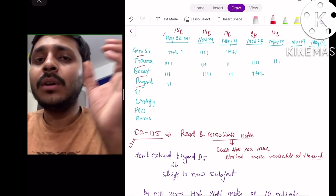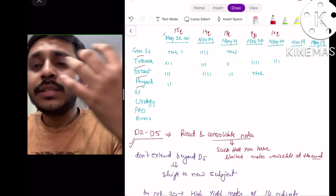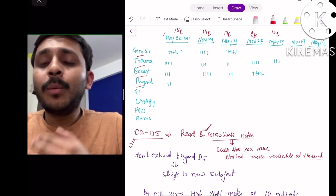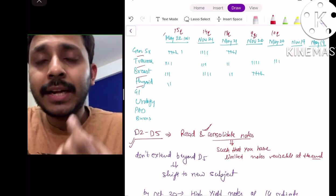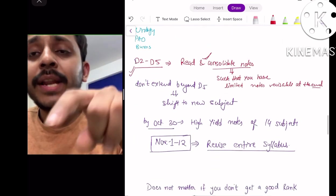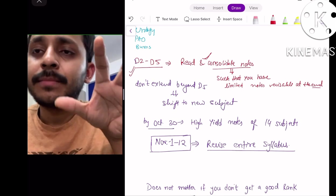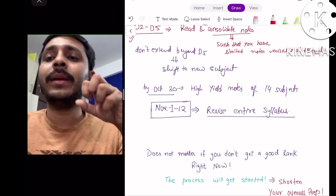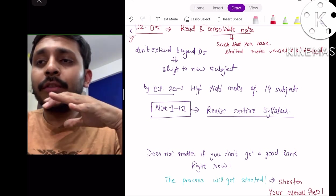From day two to day five, just read the topics which you have understood will come based on your previous questions. During this time don't try to learn and memorize everything, just make concise consolidated notes. Your whole process of revision which you will do in the last 10 days will make sure that everything in your memory gets consolidated, and don't extend your study for a particular subject beyond day five.